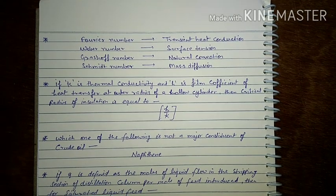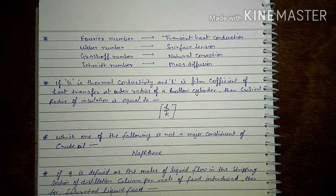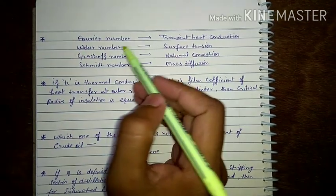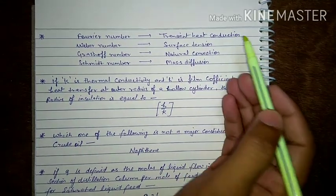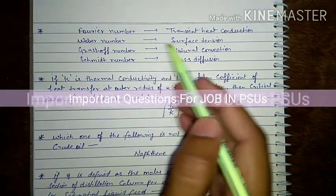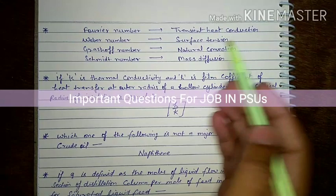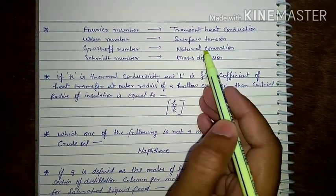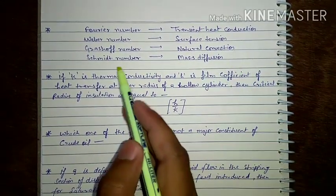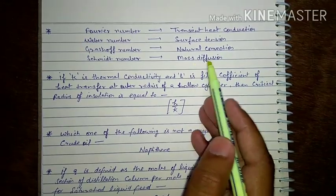Now we continue our next part. Fourier number relates to transient heat conduction, Weber number relates to surface tension, Grashof number relates to natural convection, and Schmidt number relates to mass diffusion.